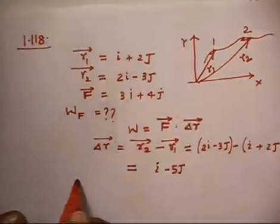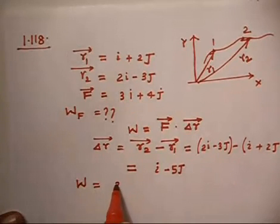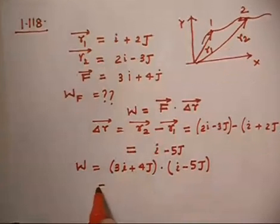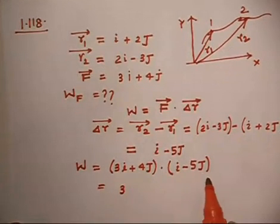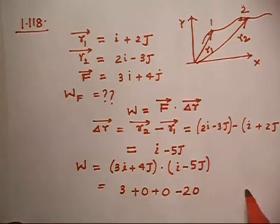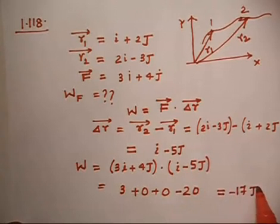So F dot dr, work done will be equal to F, which is 3i plus 4j, dot dr that is i minus 5j. Now let us take the dot product. 3i dot i is 3, i dot j is 0. 4j dot i is 0. And then this into this is 0, this into this is 0. Now 4 into minus 5, that is minus 20. j dot j is 1. So this is total work performed is minus 17 joules.